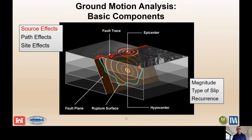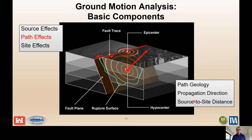That information goes into the ground motion analyses. There are three components to get your ground motions: source effects, path effects, and site effects. Source effects include magnitude, type of slip, and recurrence — all captured in those fault-specific and aerial source characterization logic trees. For path effects, these are influenced by the path geology, propagation direction, and distance. It represents the characteristics of the materials that the energy released during an earthquake travels through on its way from the hypocenter to the site of interest.